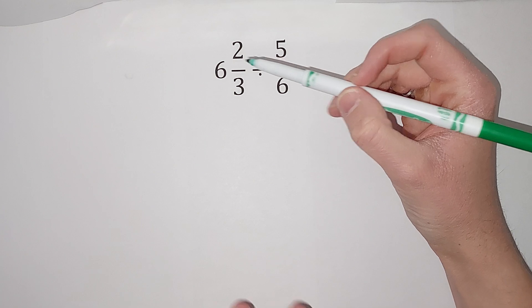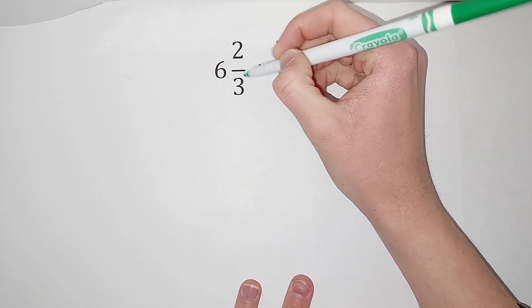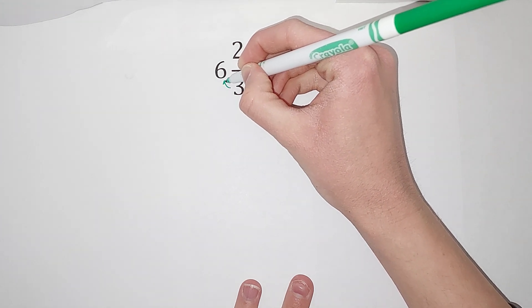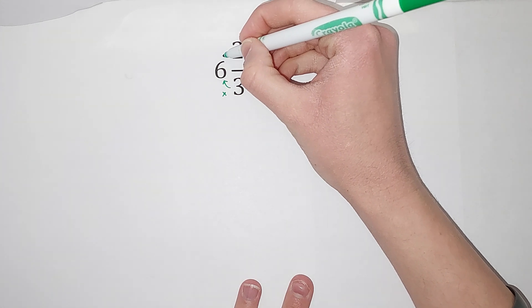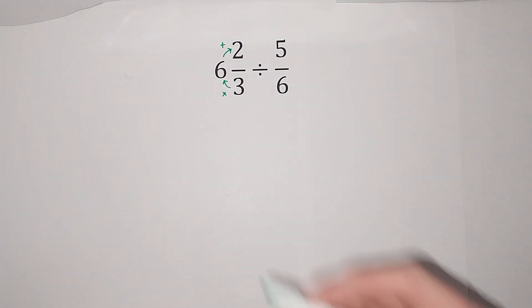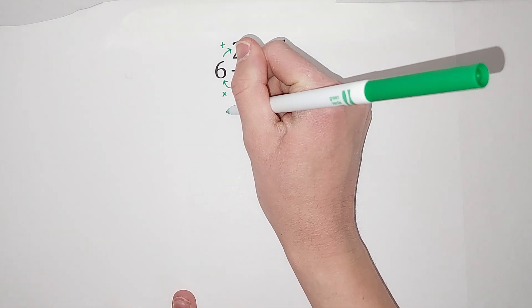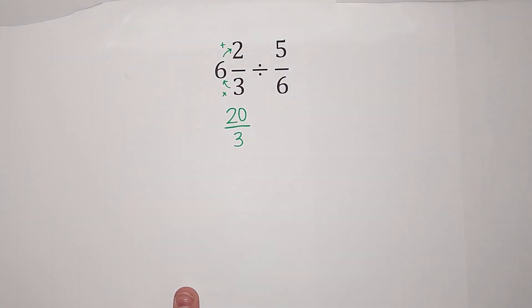So to do that, I will link a video in the corner if you need some more examples, but I'm also going to do it right here. We take our denominator and multiply it by the big number here. So 3 times 6 gives me 18, and then we add the numerator. So 18 plus 2 gives me 20. So that is my new numerator, and my denominator is still 3.